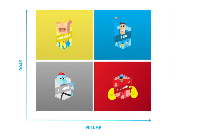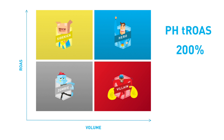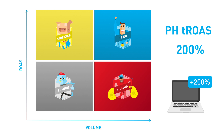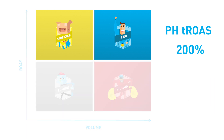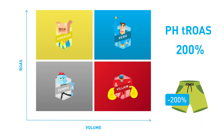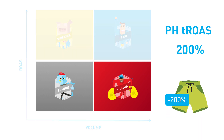Together they determine the distribution of products over the four labels. In the following example, I will show you how these two metrics work. The ROAS is on the Y-axis. Let's say you set a ProductHero target ROAS of 200%. This means that products with an actual ROAS higher than 200% become a hero or a sidekick, and products with an actual ROAS lower than 200% will become a zombie or a villain.